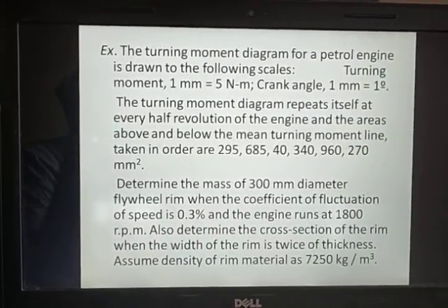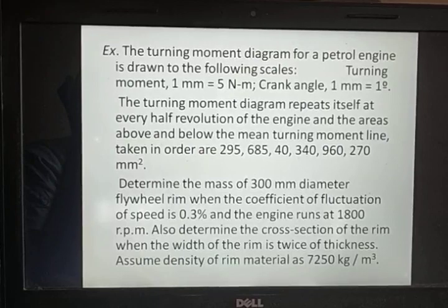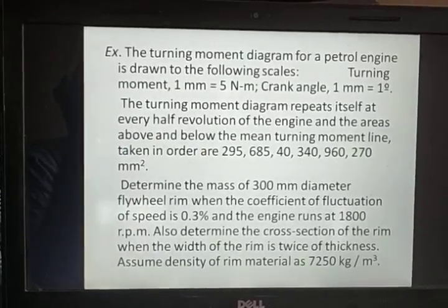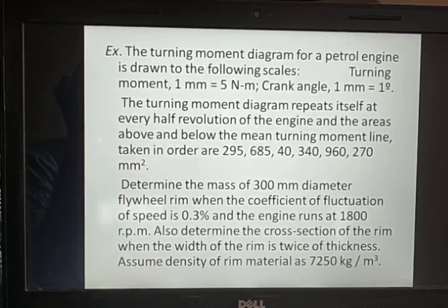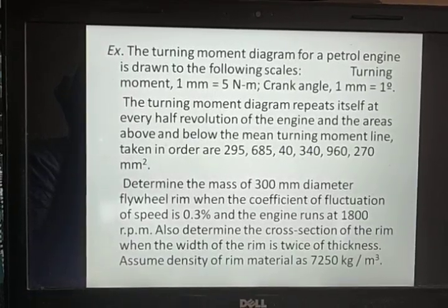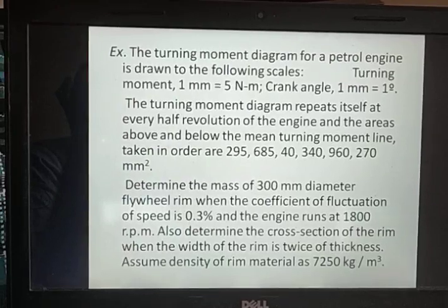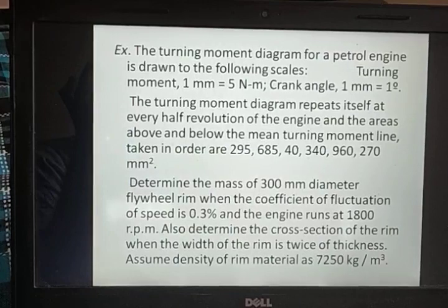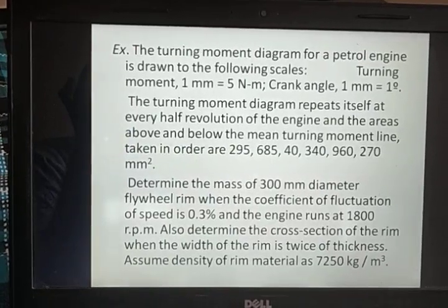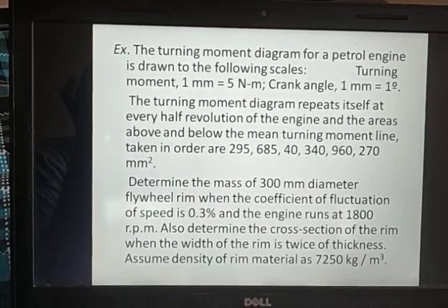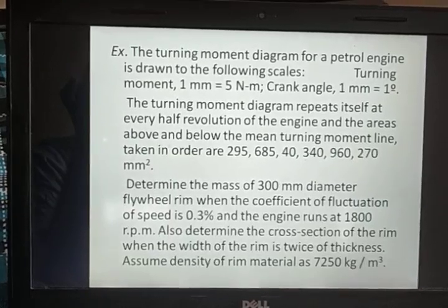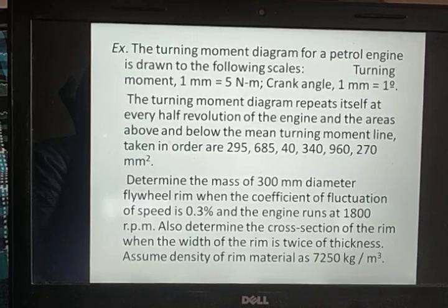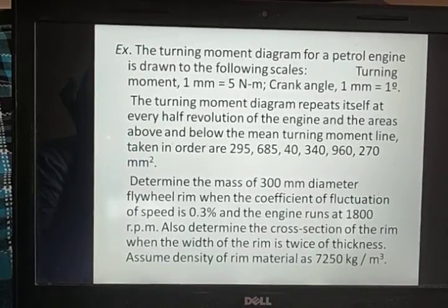The turning moment diagram repeats itself at every half revolution of the engine. The areas above and below the mean turning moment line, taken in order, are 295, 685, 40, 340, 960, and 270 mm square. We need to determine the mass of a 300 mm diameter flywheel when the coefficient of fluctuation of speed Cs is 0.3%.